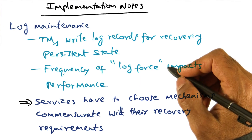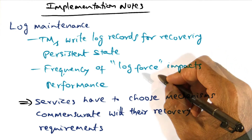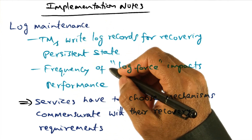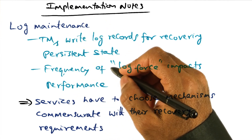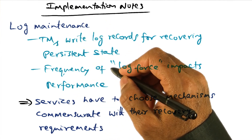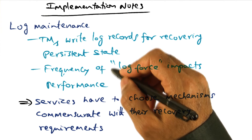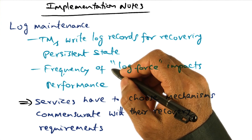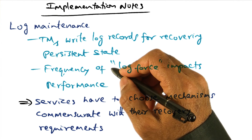But in Quicksilver, an app has to be very careful about how often they do a log force, because log maintenance is done by the transaction manager at a site for all of the processes that are running at that node. And so the log record in Quicksilver actually contains all the modifications to persistent state required by all the processes running at this node.